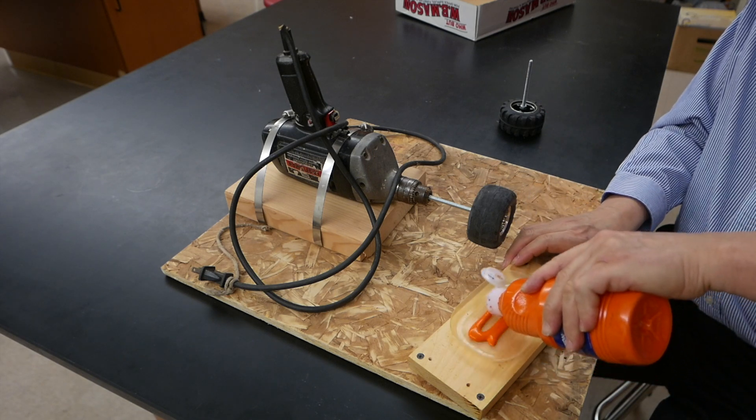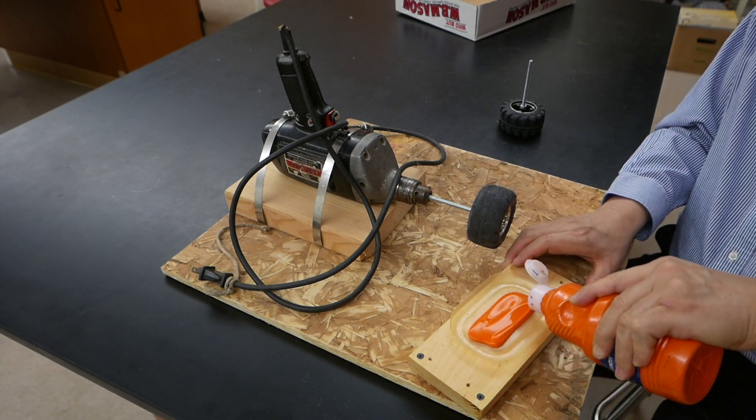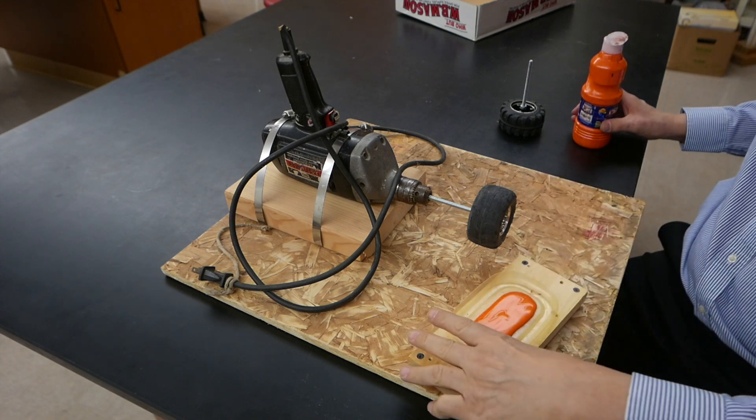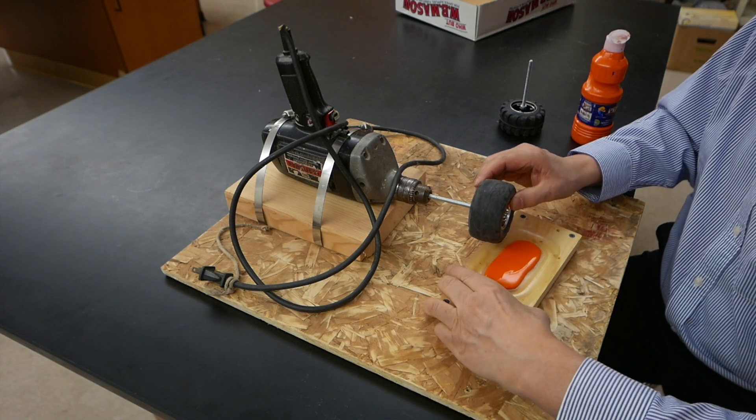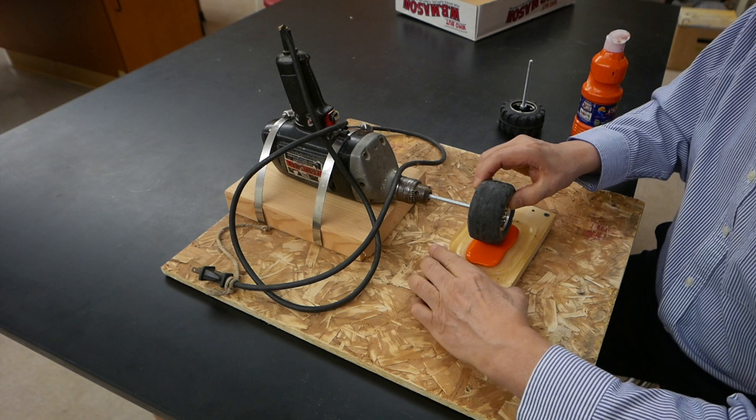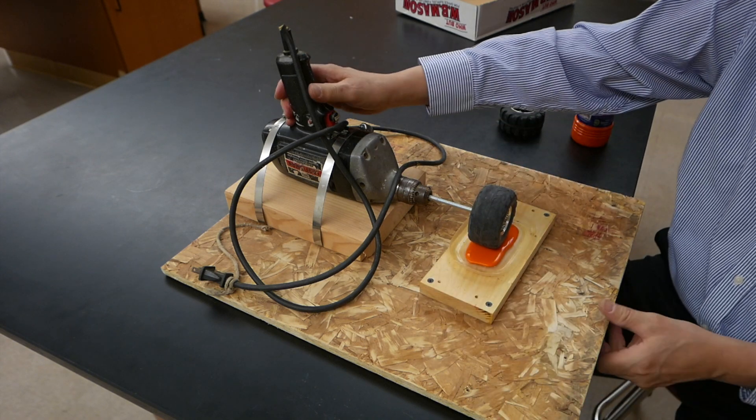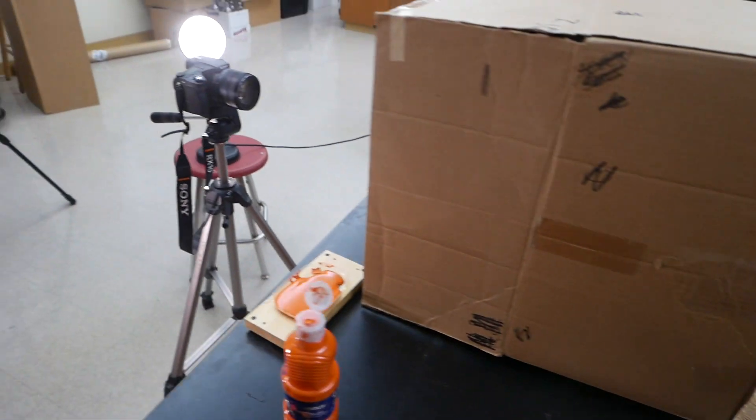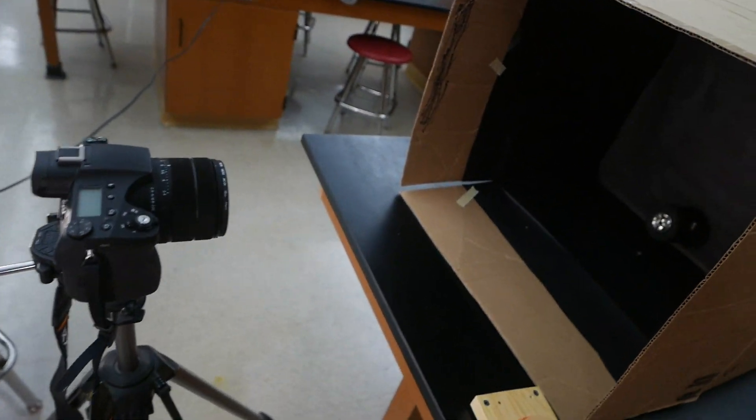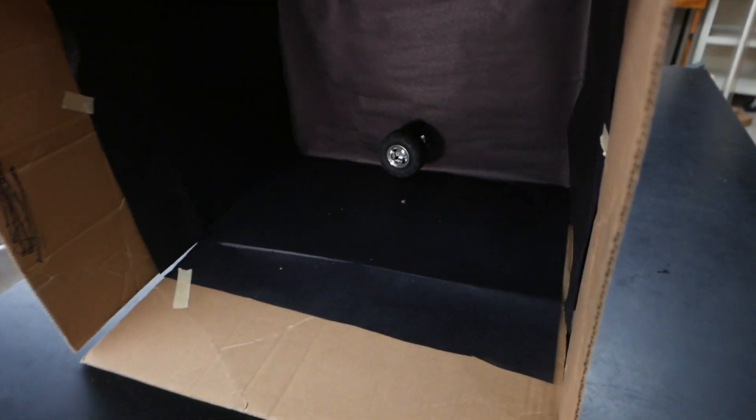In this tire we're going to put some paint in. And then we'll put this underneath the tire and turn it on. Well, not quite yet. The bolt's actually going to be through a box so it's not splattering paint all over the room.